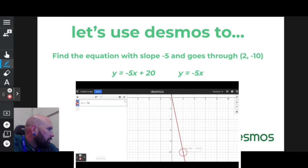So the answer is y equals negative 5x, which has a slope of negative 5 and also goes through (2, -10).